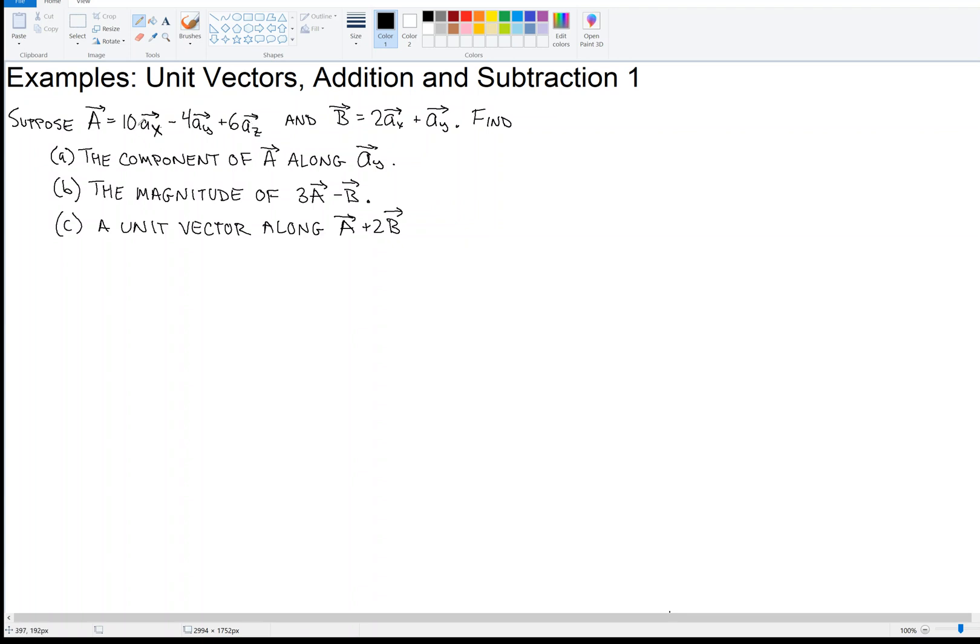So 10 minus 4 is 6. And B similarly is twice, or two, two steps in the X direction, one unit in the Y direction, and 0 in the Z direction. So given that, then find the component of A along AY.